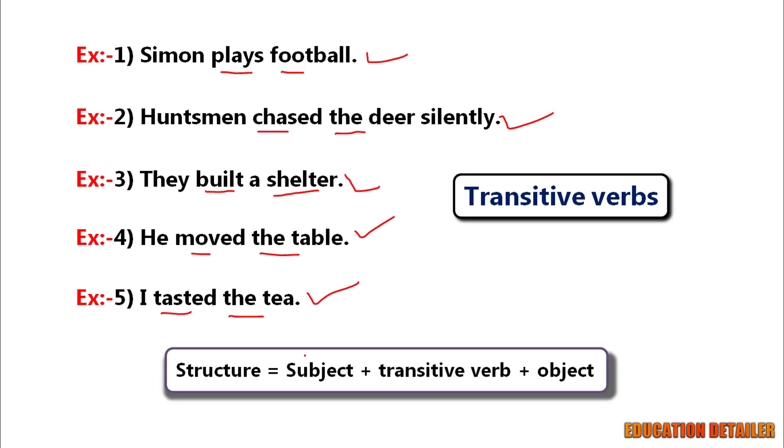You can note down the structure: subject plus transitive verb plus object. One more thing to remember that a transitive verb can also have an indirect object that precedes the direct object, means a transitive verb can take more than one object.